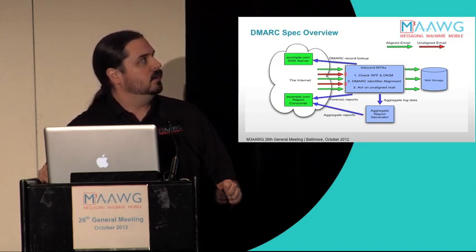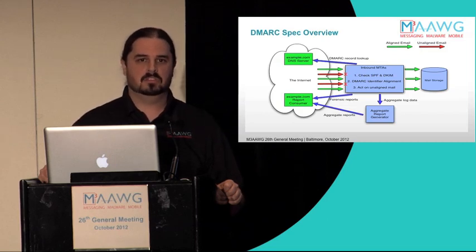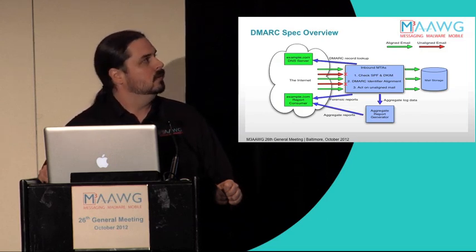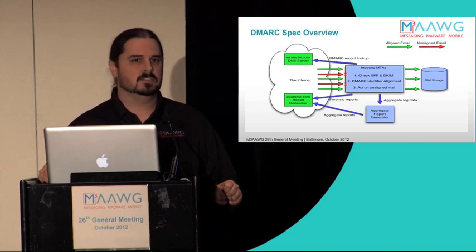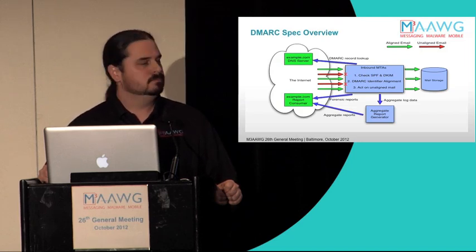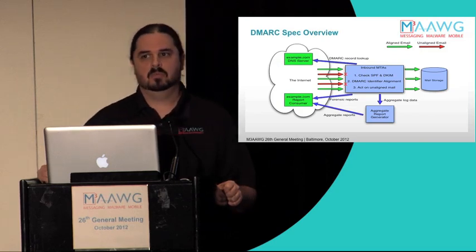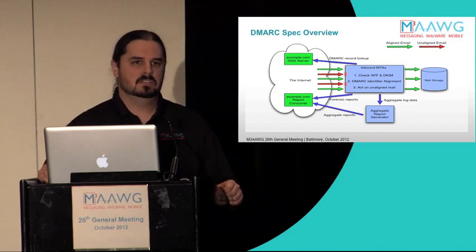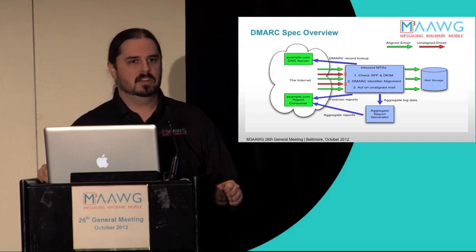That DMARC identifier alignment check involves reaching out to the DNS server of the domain that the mail claims to be from and checking for a DMARC record. If it finds one, it proceeds with doing identifier alignment. If the mail is found to be unaligned and there's an action requested in that DNS record, they take it — that might be quarantine the mail or rejection. Regardless of what action it takes, it'll do some reporting if it finds a DMARC record, either sending a real-time forensic report back to the reporting address, or saving data to generate an aggregate report for that sending domain later that day.